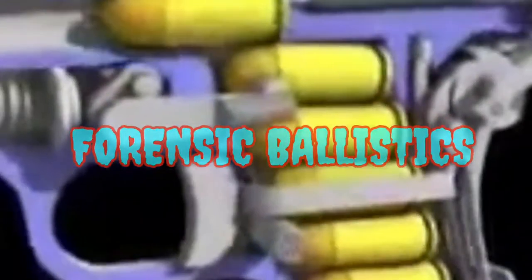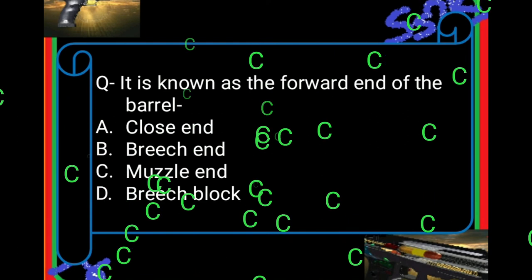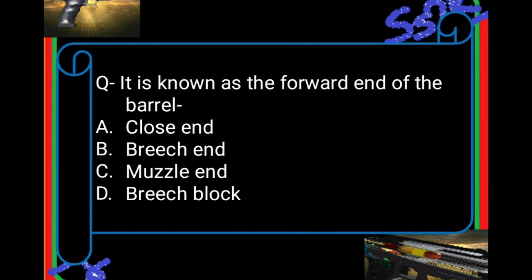Question number one: It is known as the forward end of the barrel. Letter A: closed end; B: bridge end; C: muzzle end; D: bridge block. The answer is muzzle end — the forward tip of the barrel. The rearward end of the barrel is called the bridge end, while the forward end is called the muzzle end. The hole through the barrel is called the bore of the firearm.